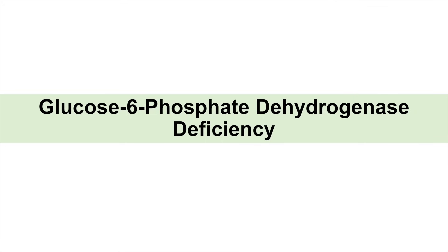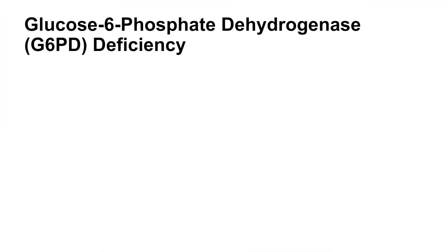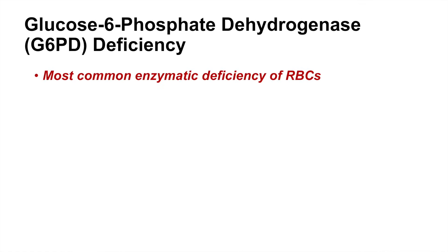Hey everyone, and this is where we're going to talk about glucose-6-phosphate dehydrogenase deficiency. So, what is glucose-6-phosphate dehydrogenase deficiency? Well, it is pretty much what its name suggests — it is a deficiency in the enzyme glucose-6-phosphate dehydrogenase. And in fact, it is the most common enzymatic deficiency of red blood cells.